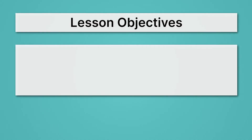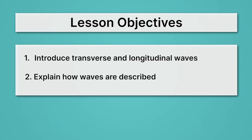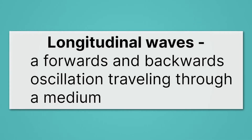All right, team, let's start by reviewing our lesson objectives. First, we'll introduce transverse and longitudinal waves. Then we'll explain how waves are described. Just two lesson objectives this time. First up, what are longitudinal waves? Longitudinal waves are a forwards and backwards oscillation traveling through a medium. That's a dense definition — there's a lot going on there. Let's break that apart a little bit.